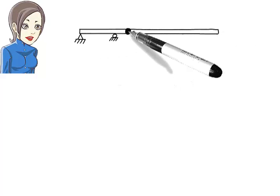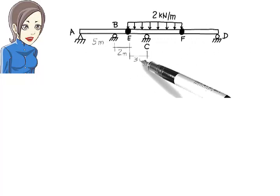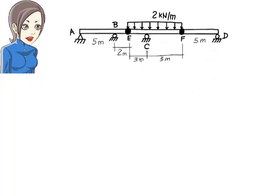What happens if the beam has multiple internal hinges? How do we analyze such a beam? Here is a beam with two internal hinges. The beam rests on four supports, a pin support, and three roller supports.